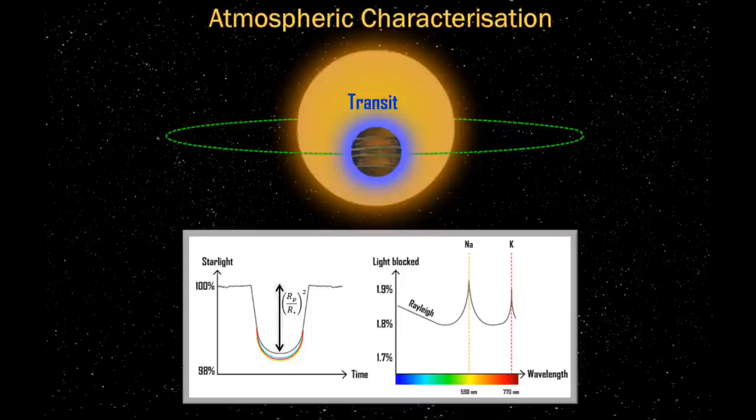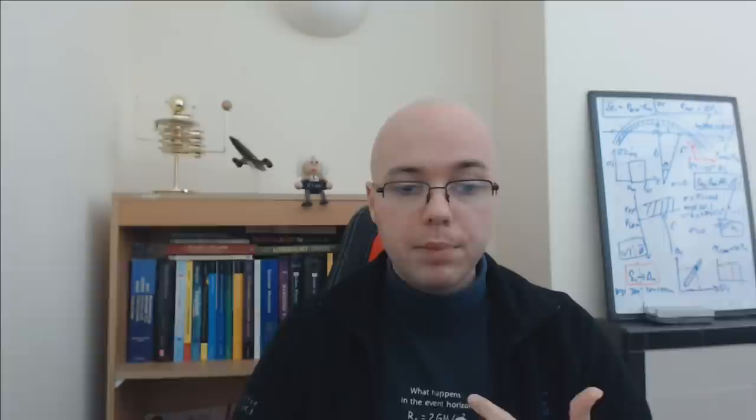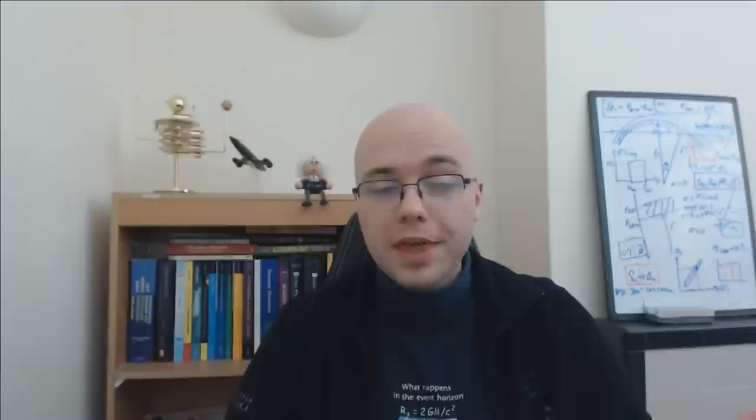Equally, if we push forward to red wavelengths, we can see absorption features due to potassium. This was actually predicted very early on — shortly after we discovered the first transiting extrasolar planet, HD209458b, in the year 2000 — it was predicted that we should be able to measure sodium in the atmosphere. And we did. In 2002, sodium was detected for the first time, giving us our first definitive measurement of chemistry in an extrasolar planet.